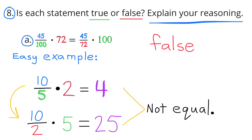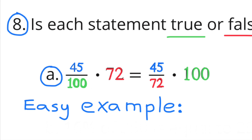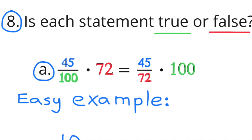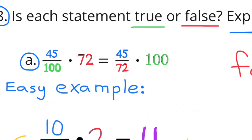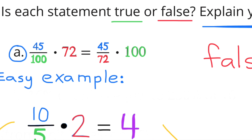Problem 8 — is each statement true or false? A: 45 over 100 times 72 equals 45 over 72 times 100. Using a simpler example: 10 over 5 times 2 equals 4, but rearranging to 10 over 2 times 5 gives 25. Since 4 and 25 are not equal, the same logic applies to A. So A is false: 45 divided by 100 times 72 does not equal 45 divided by 72 times 100.